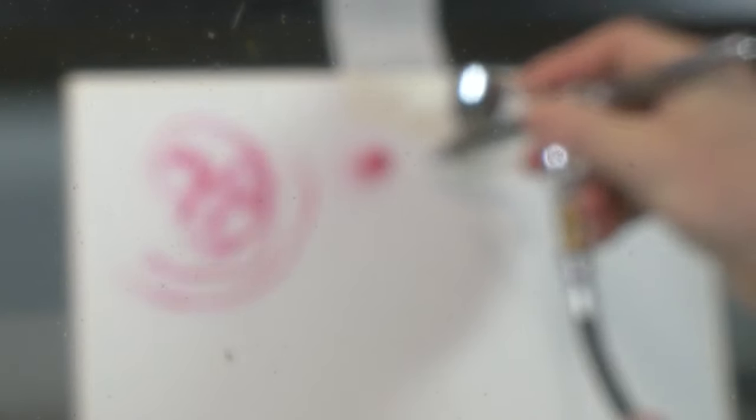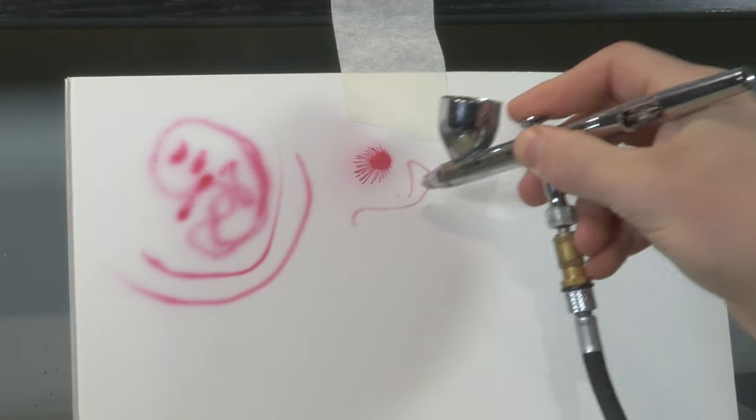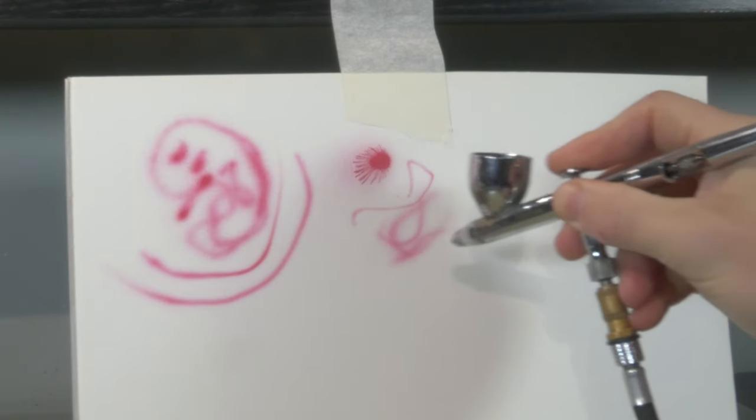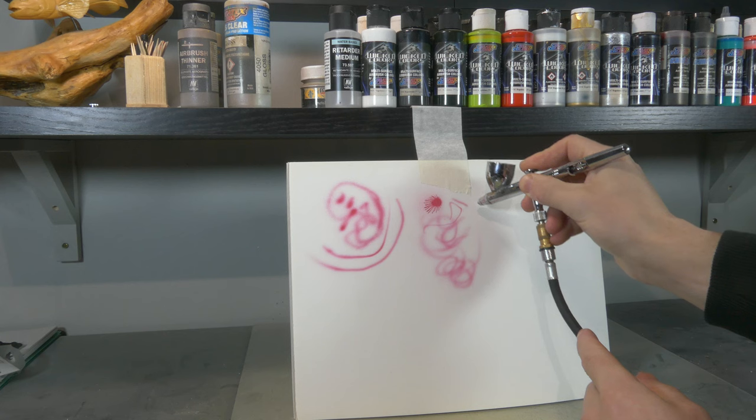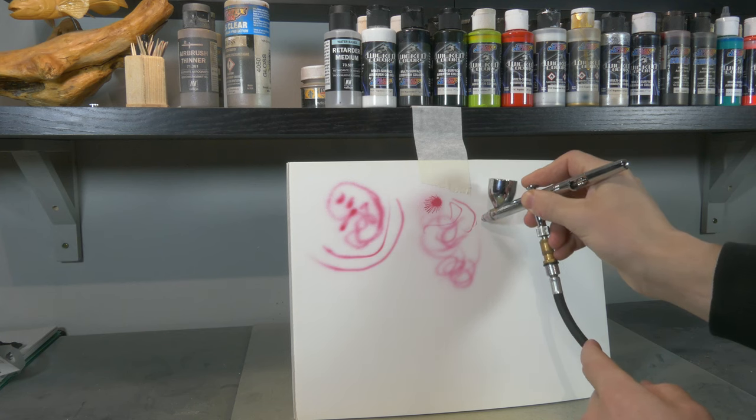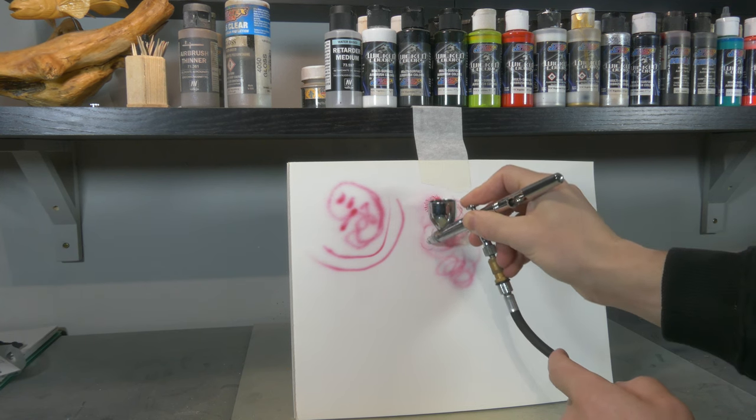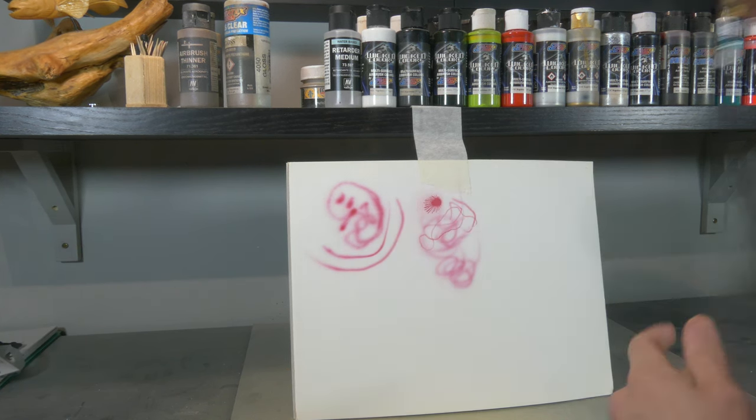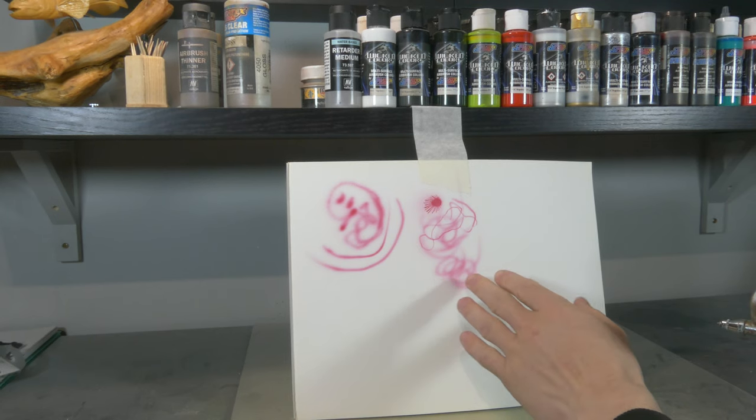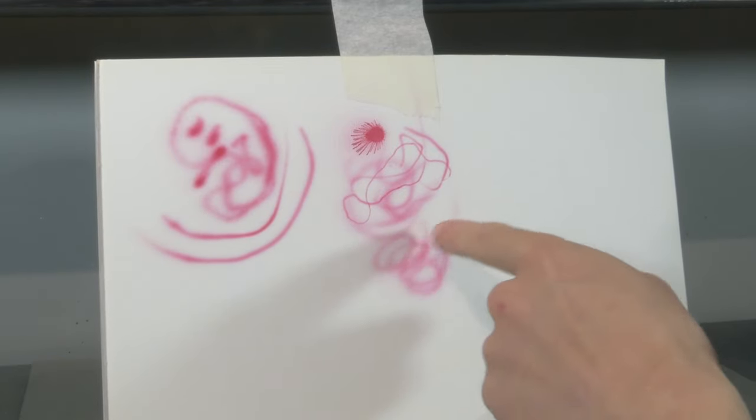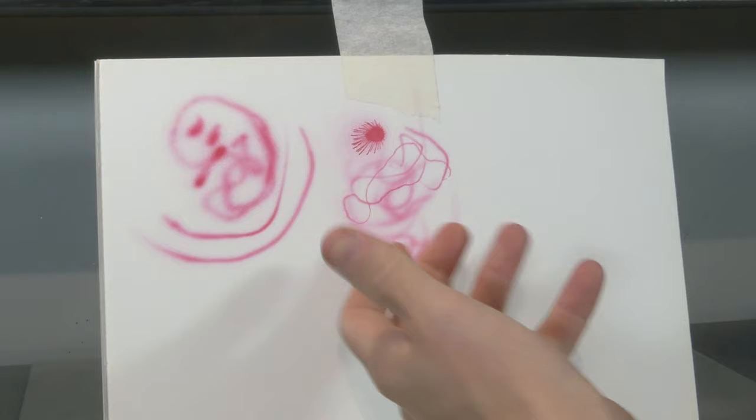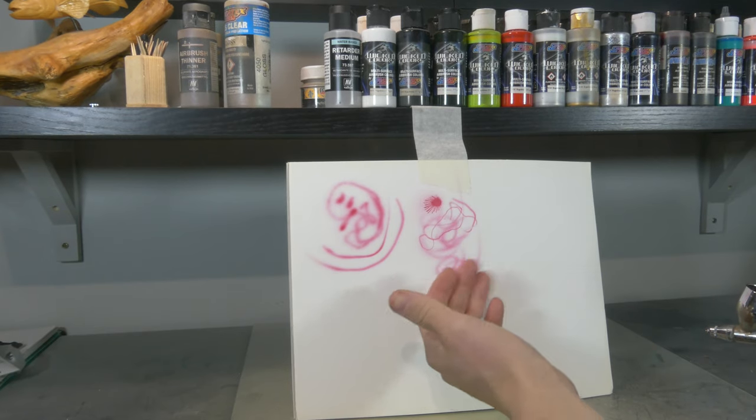And as you can see now I got full control. I can do very nice and light shading which does not look grainy. If you look in comparison to this you can see with reducer my paint is a lot softer.